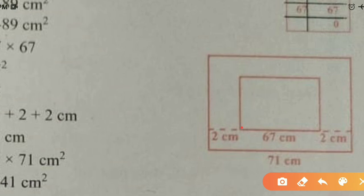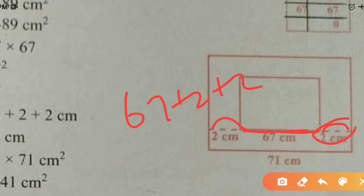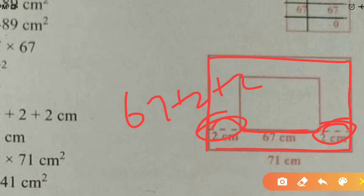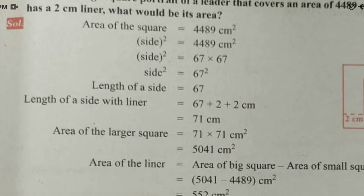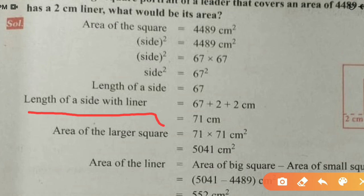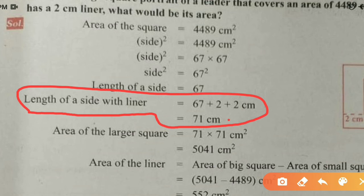The portrait side is 67 cm. The liner space is 2 cm on the right and 2 cm on the left, so the total side length of the larger square is 67 plus 2 plus 2, which is 71 centimeters. So the length of a side with liner is 71 centimeters. The area of the larger square is 71 into 71, which equals 5,041 centimeter square.